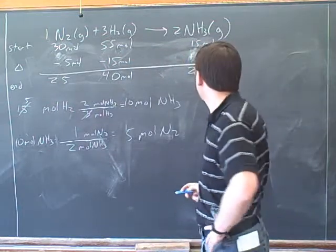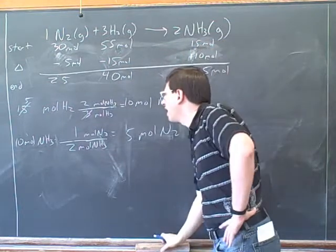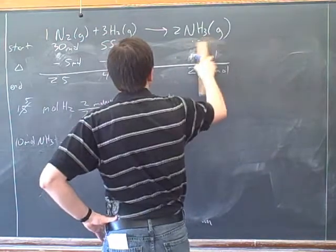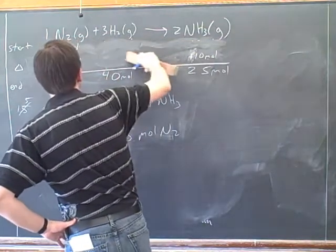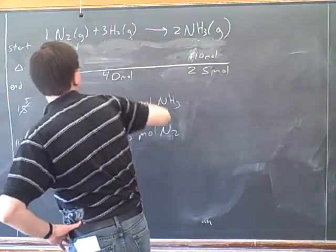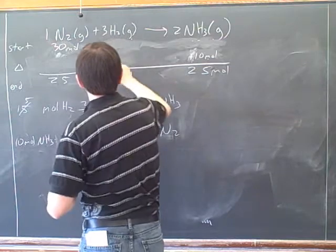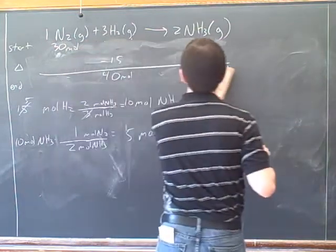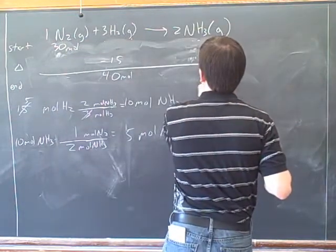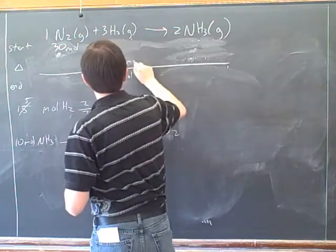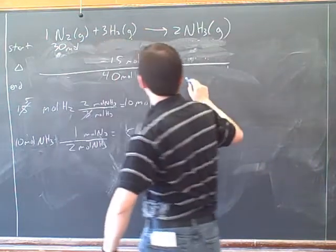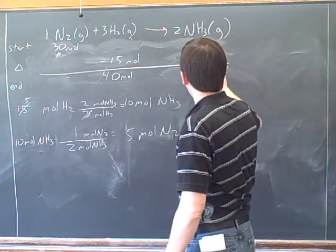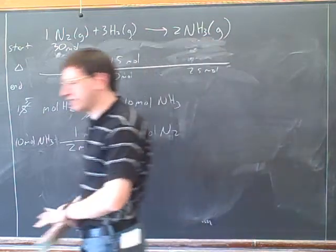On the test, how would this have been given? What was the original information? I didn't give you most of what's in this table — you just had the minus 15 moles, then the end: 40 moles for H2, and the end: 25 moles. So how would this be given on the test?